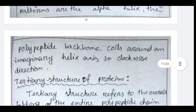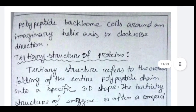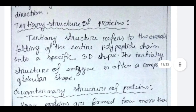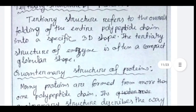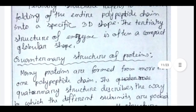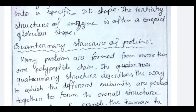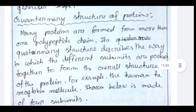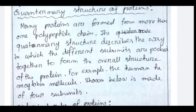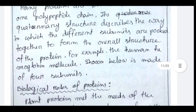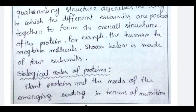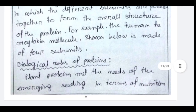Tertiary structure refers to the overall folding of the entire polypeptide chain into a specific 3D shape; the tertiary structure of an enzyme is often a compact globular shape. Quaternary structure: many proteins are formed from more than one polypeptide chain; the quaternary structure describes the way different subunits are put together to form the overall structure of the protein. For example, the human hemoglobin molecule is made of four subunits.